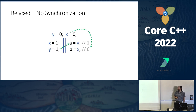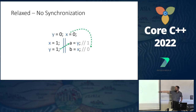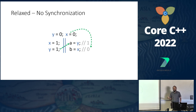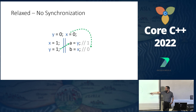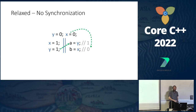No synchronization means that if I write 1 to x and then 1 to y, I can read 1 for y but still read 0 for x from the initialization. In terms of reordering, I basically changed the order of the writes — I first wrote 1 to y — which is why I was able to read it before 1 was written to x.